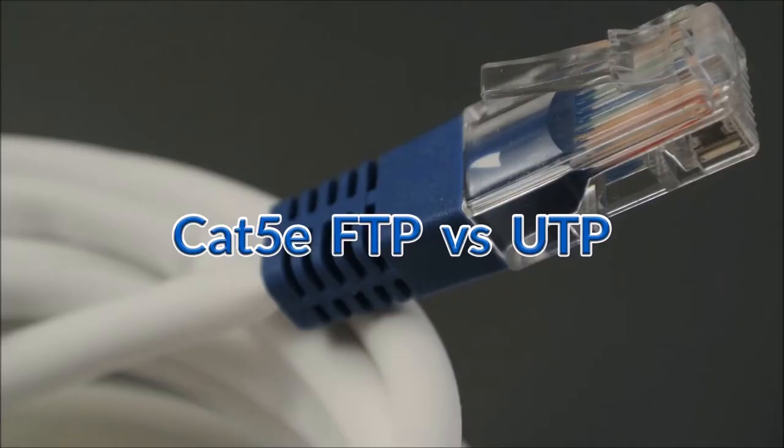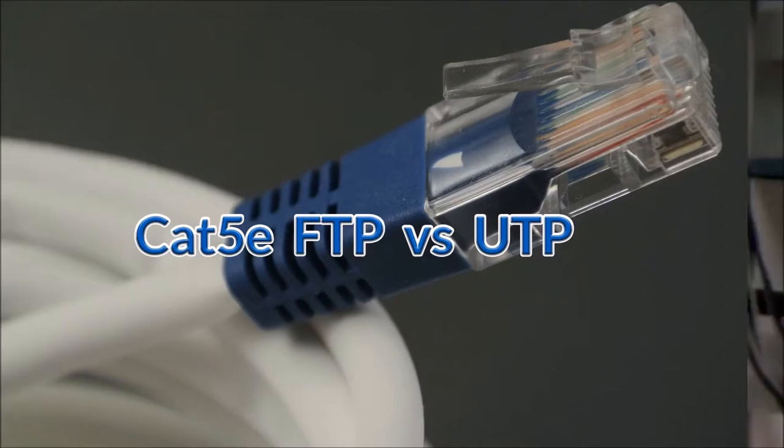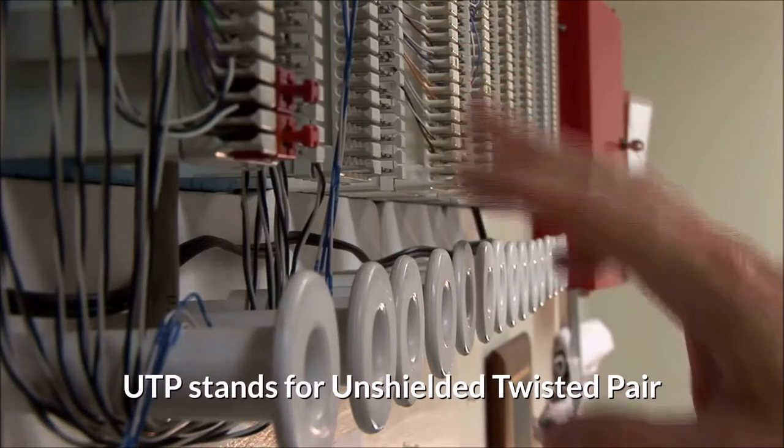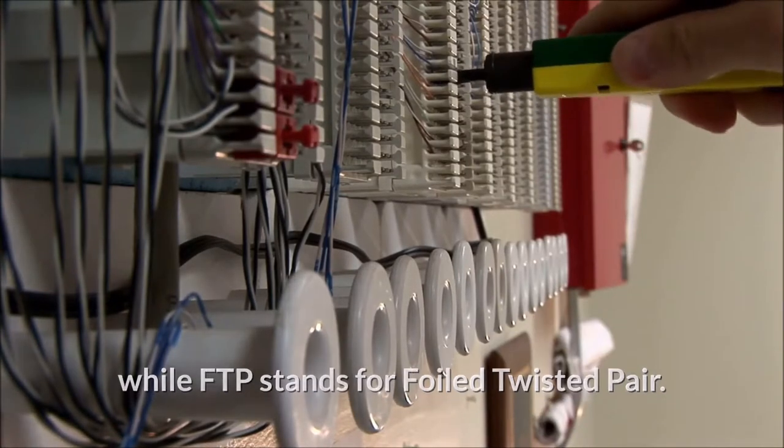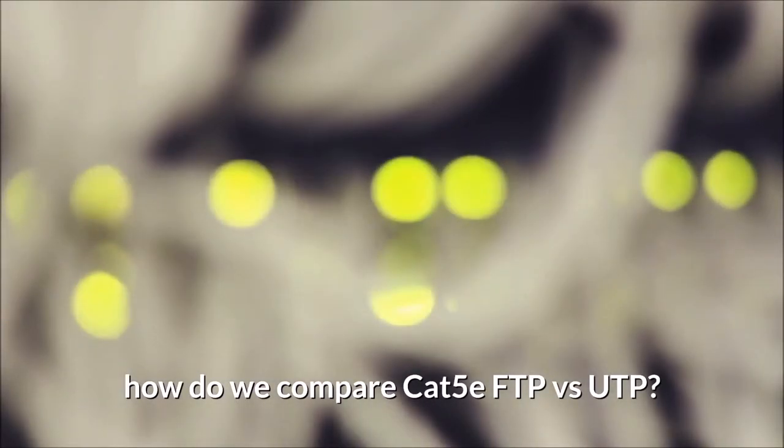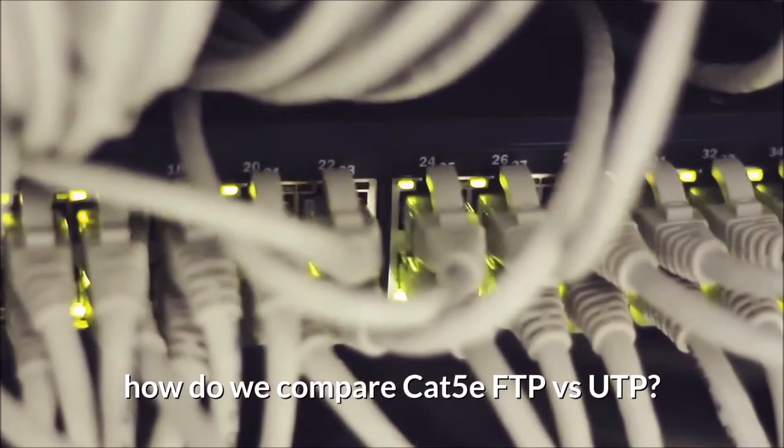Cat 5e, FTP vs UTP. UTP stands for unshielded twisted pair, while FTP stands for foiled twisted pair. However, how do we compare Cat 5e FTP vs UTP?